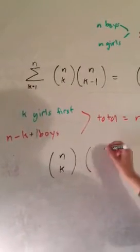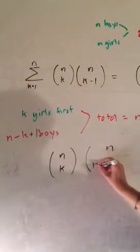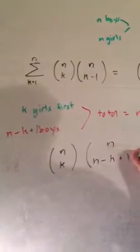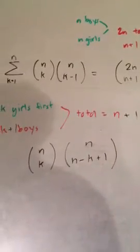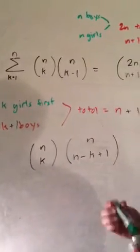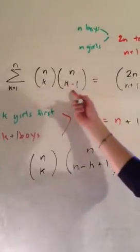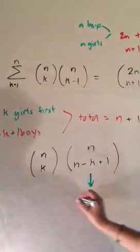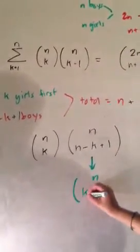Now when we're choosing the boys, there's a total of n, and there's n minus k plus one that we're choosing. And now this is where that symmetric thing comes in that you would never know unless you knew the symmetry. This and this are the same thing. This is actually equal to n choose k minus one.